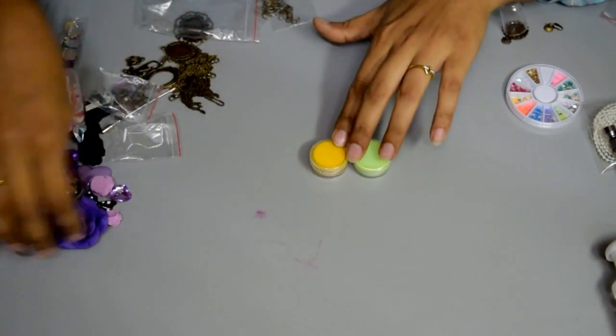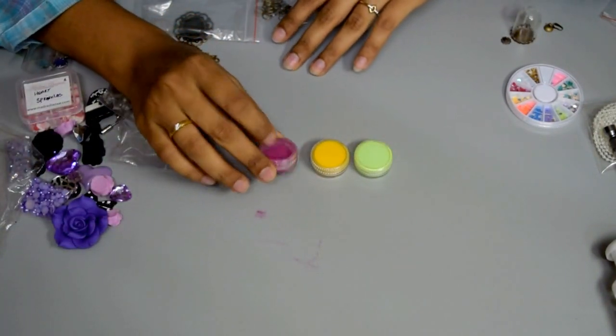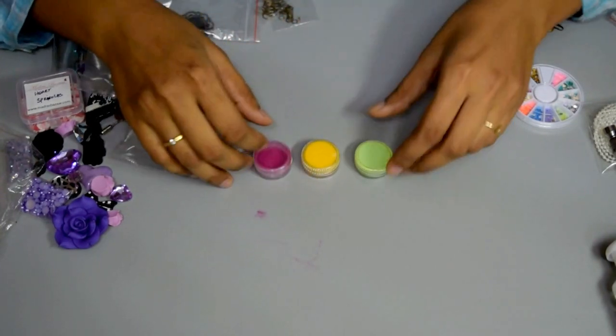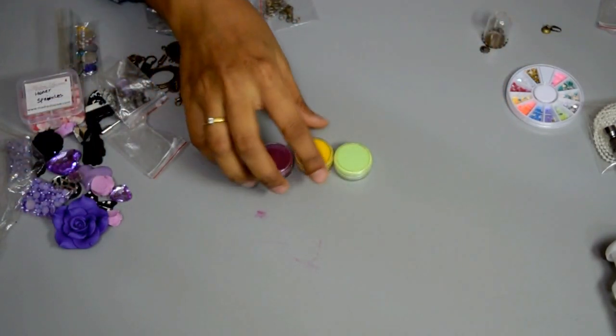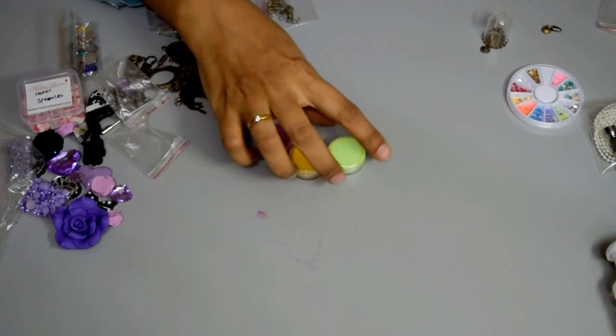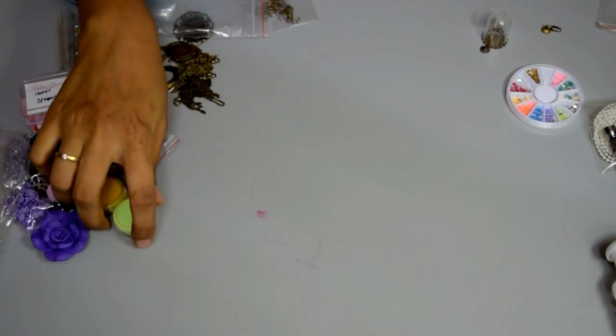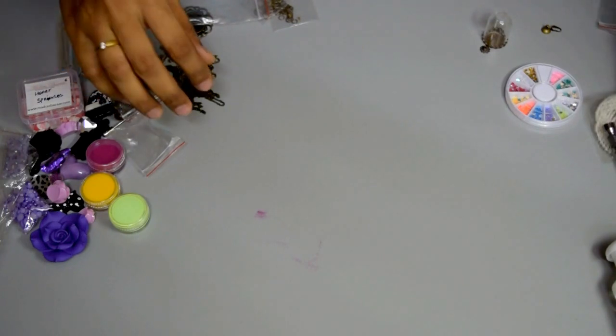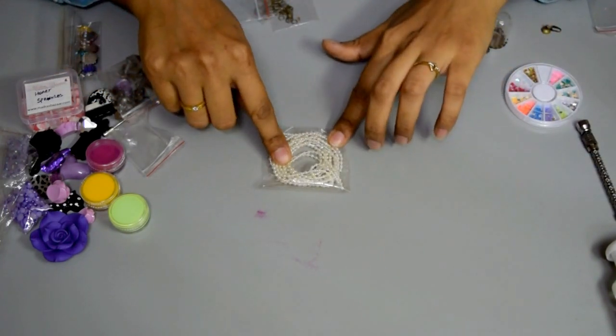These are acrylic powder colors - pink, yellow and green. I will be using this to color my resin products. This is fused pearl string.